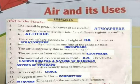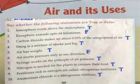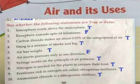Oxides of nitrogen are extremely toxic to lung tissues. Air occupies space. Oxygen is needed for combustion. Nitrogen is needed for the manufacture of fertilizers. True or False: The ionosphere exists above the stratosphere — True. The ionosphere extends up to 64 km — False. Carbon dioxide makes up about 0.03% of the composition of air — True. Smog is a mixture of smoke and fog — True. Air has weight — True. Air exerts pressure only in one direction — False. Windmills work on the principle of air pressure — True. Nitrogen is needed for plants to prepare their food — True.